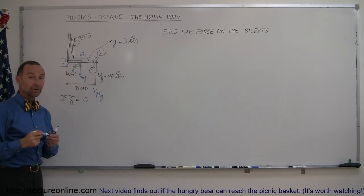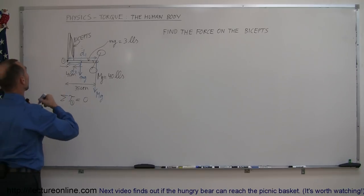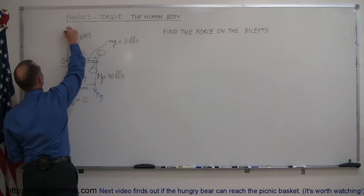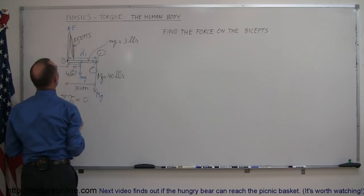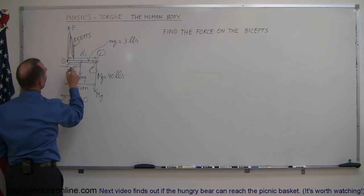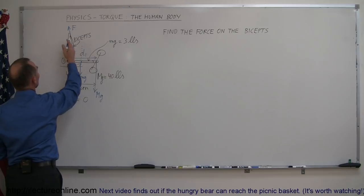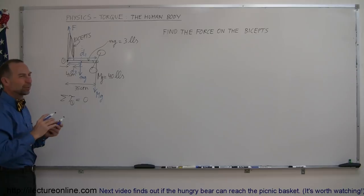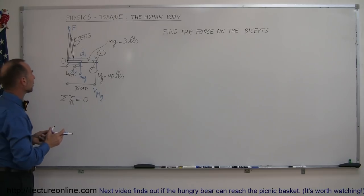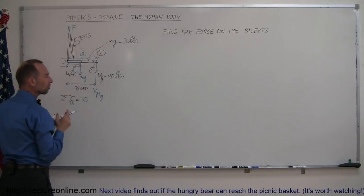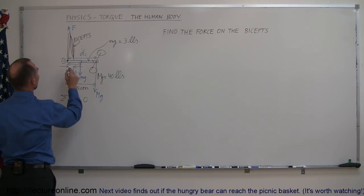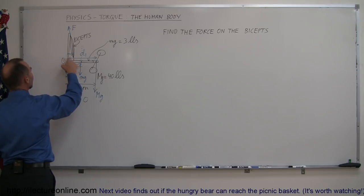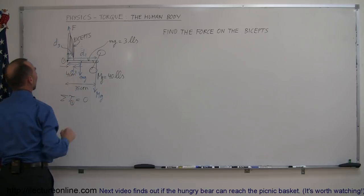Then we have a third force which is the bicep which pulls upward in this direction so that would be the force right here and the distance from the pivot point to the line of action of force. Notice there's a slight angle in there and for this particular purpose we're going to ignore the angle because it's almost straight up, the angle is so small so we just simply have to worry about this distance right here from the point where it's attached to the pivot point right there and let's call this distance D3 which was given as 4 centimeters.